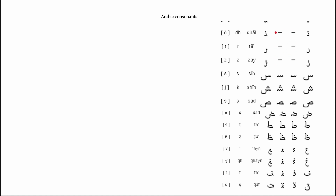Remember that dal, ra, and zain are exception letters — they don't connect on the left side. So even if they appear in the middle of a word, there is no medial form; they connect only from the right.